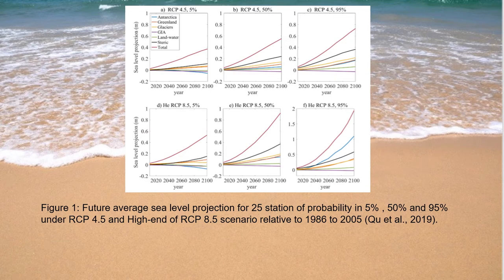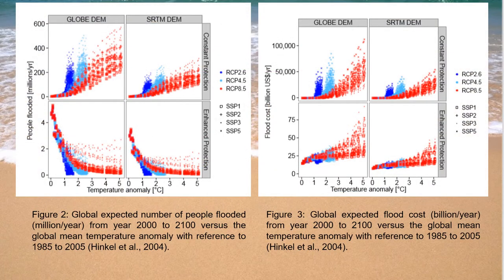Here are some results from images in the journals. Figure 1 shows the future sea level projection using RCP 4.5 and 8.5. From this figure, we can see that the higher the probability level and the RCP scenario, the higher the sea level projection will be in the year 2100. Sea level rise is currently considered one of the most concerning environmental issues, as it will contribute to extreme impacts on humans such as flooding. By using the RCP and DEM methods, scientists have estimated the number of people flooded and the flood costs from the year 2000 to 2100, as shown in Figures 2 and 3.